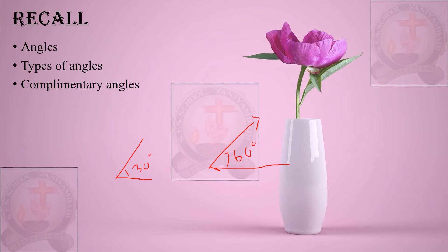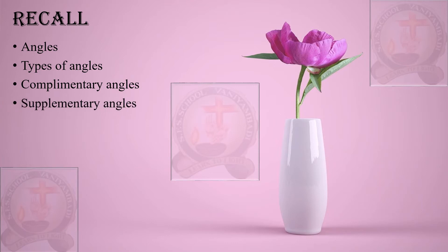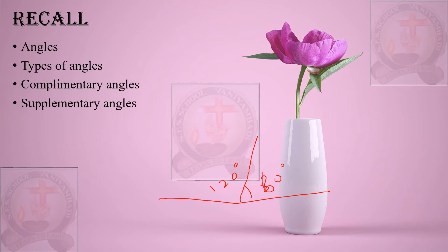Next are complementary angles. If there are two angles — for example, 60 degrees and 30 degrees — their sum is 90 degrees. If the sum of any two angles equals 90 degrees, those two angles are called complementary angles. If the sum does not equal 90 degrees, they are not complementary angles.